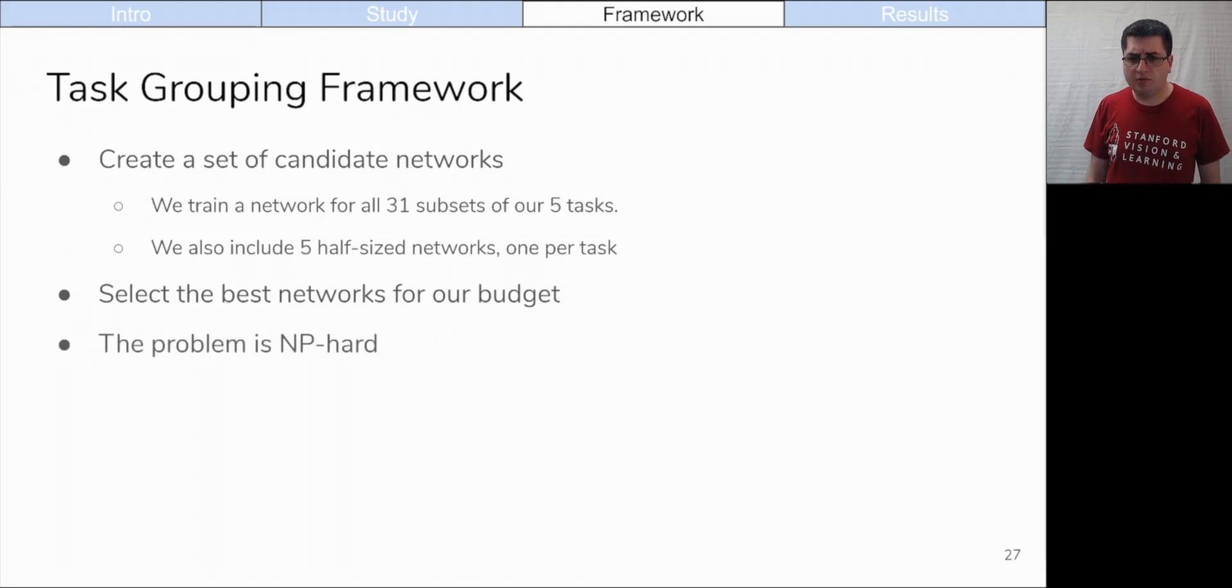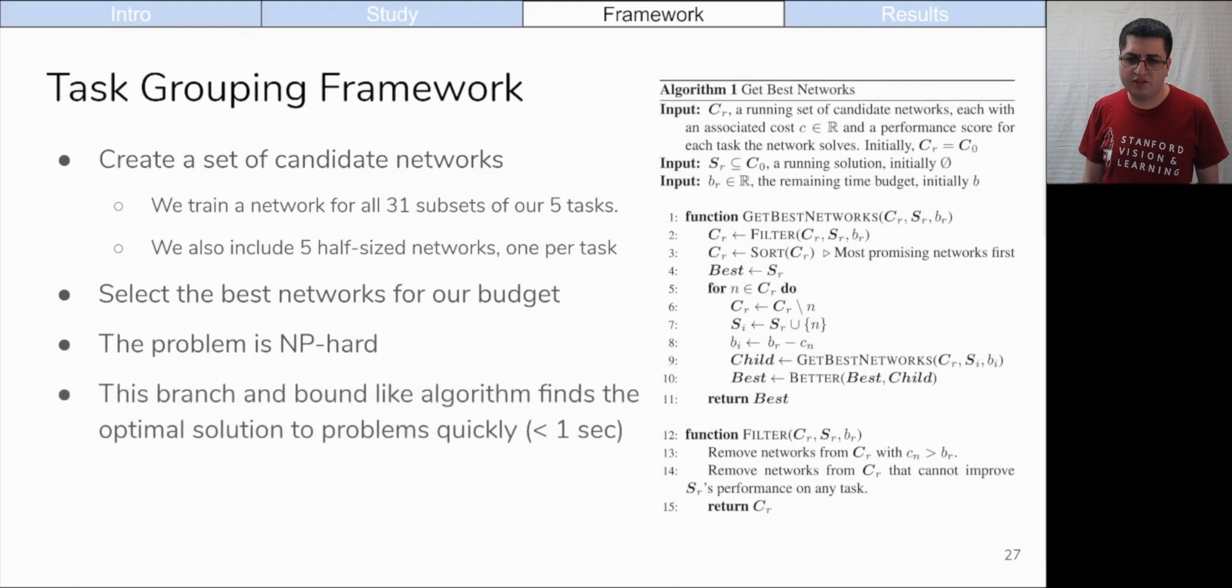Picking the optimal subset is NP-hard, unfortunately, but many algorithms exist that can quickly find the optimal solution anyway. We provide one that is based on branch and bound, but the problem could be reduced to your favorite NP-hard problem and solved with an off-the-shelf solver. Every optimal algorithm will find the same solution for each budget, so the algorithm isn't really that important.